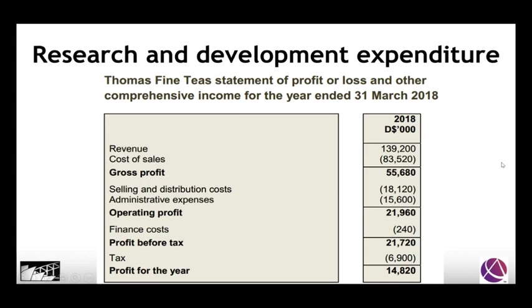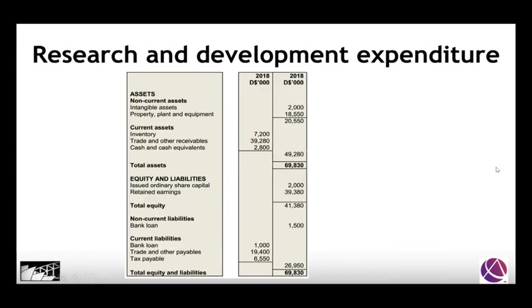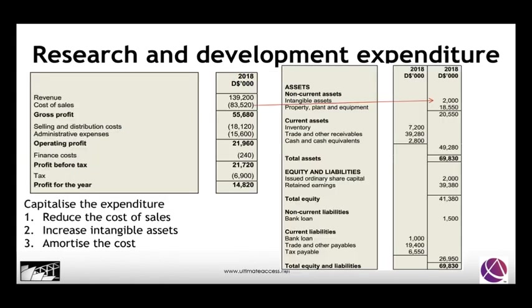Looking at the statement of profit or loss, there may be a certain amount of money included in the cost of sales which we could capitalize as an intangible asset. Similarly, where a company has intangible assets, we would reduce the cost of sales and increase the intangible assets. Over time we would amortize those intangible assets, effectively charging the cost to cost of sales over the life of the asset rather than at the time the cost is incurred.